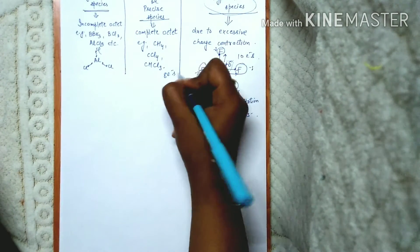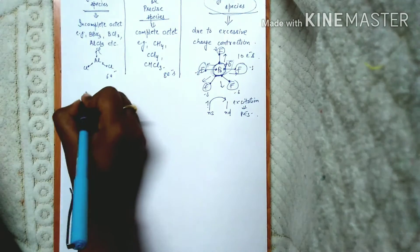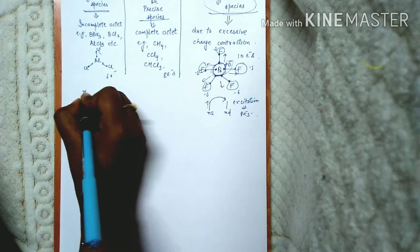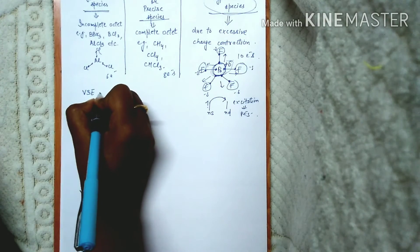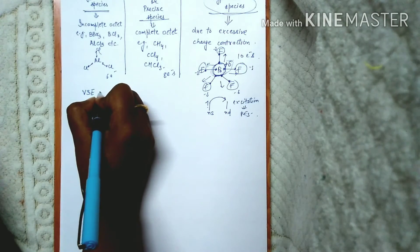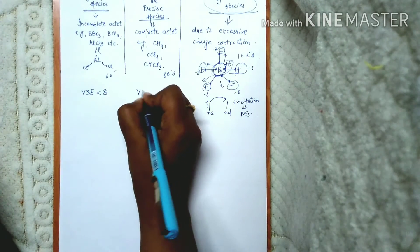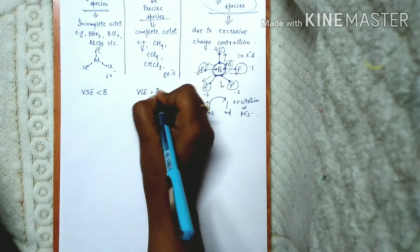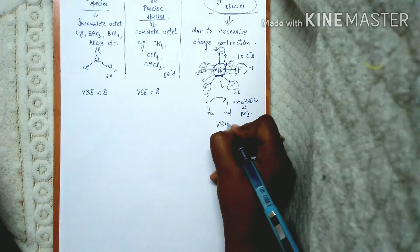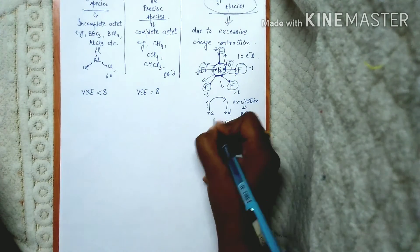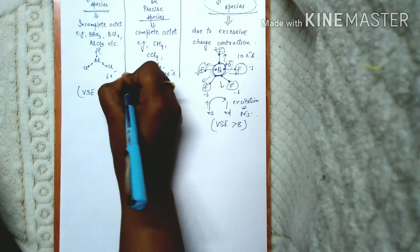Due to this contraction, the distance between the ns and nd orbitals decreases, so electrons in the ns orbitals can now excite to the nd orbitals, and due to this excitation PF5 is formed. In hypovalent species the valence shell electrons are less than eight, in valent species they equal eight, and in hypervalent species they are more than eight.